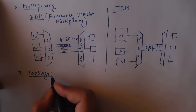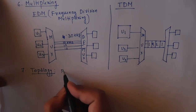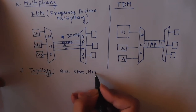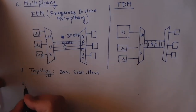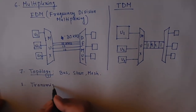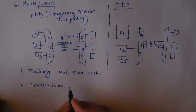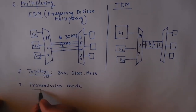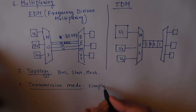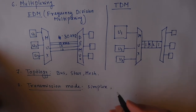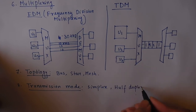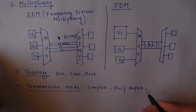The next function is topology, which means the structure of the network. It may be a bus, star, or mesh topology. The final function is transmission mode, which may be simplex — data can be sent one way only — or half duplex — data can be sent both ways but not at the same time.